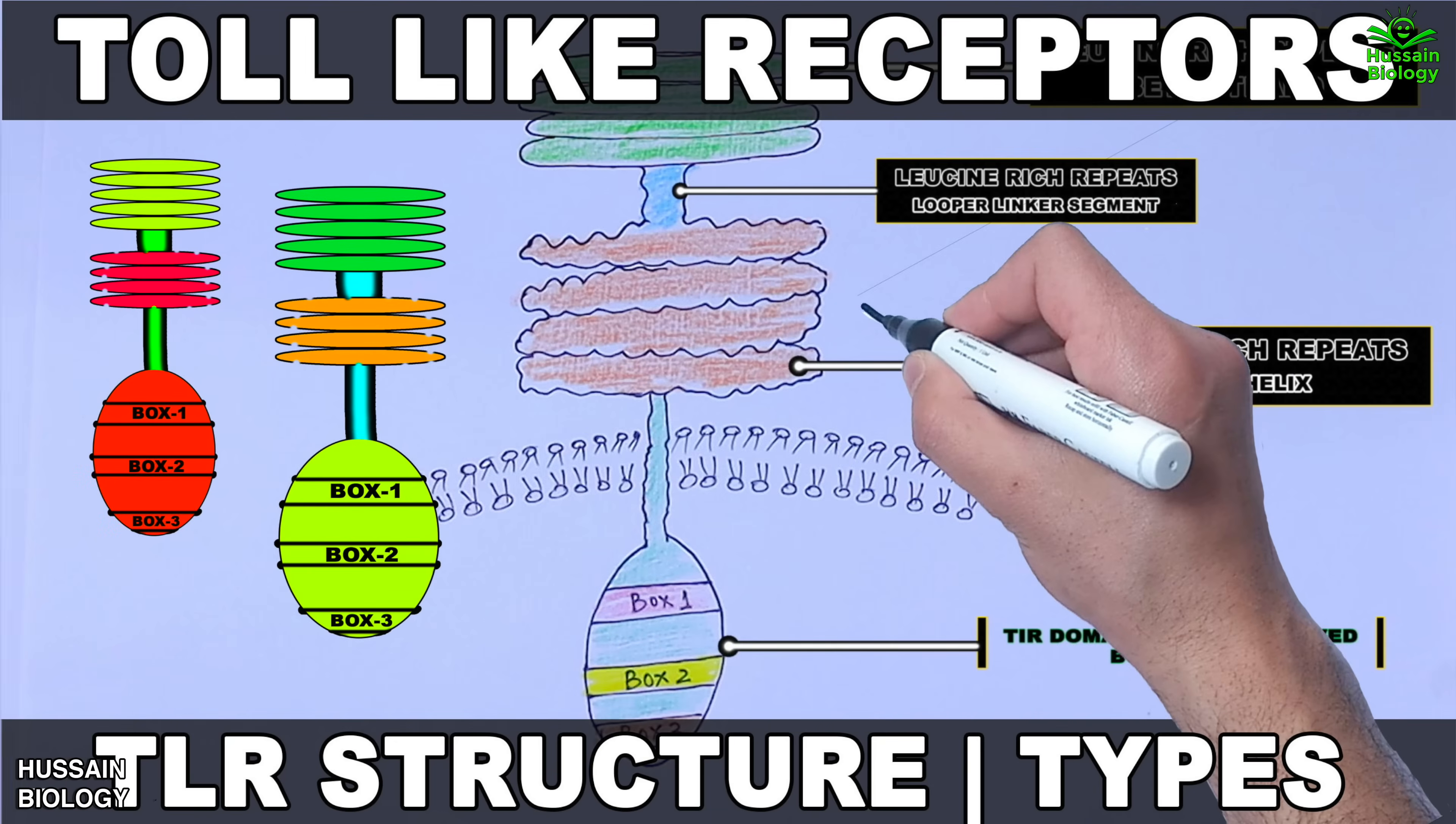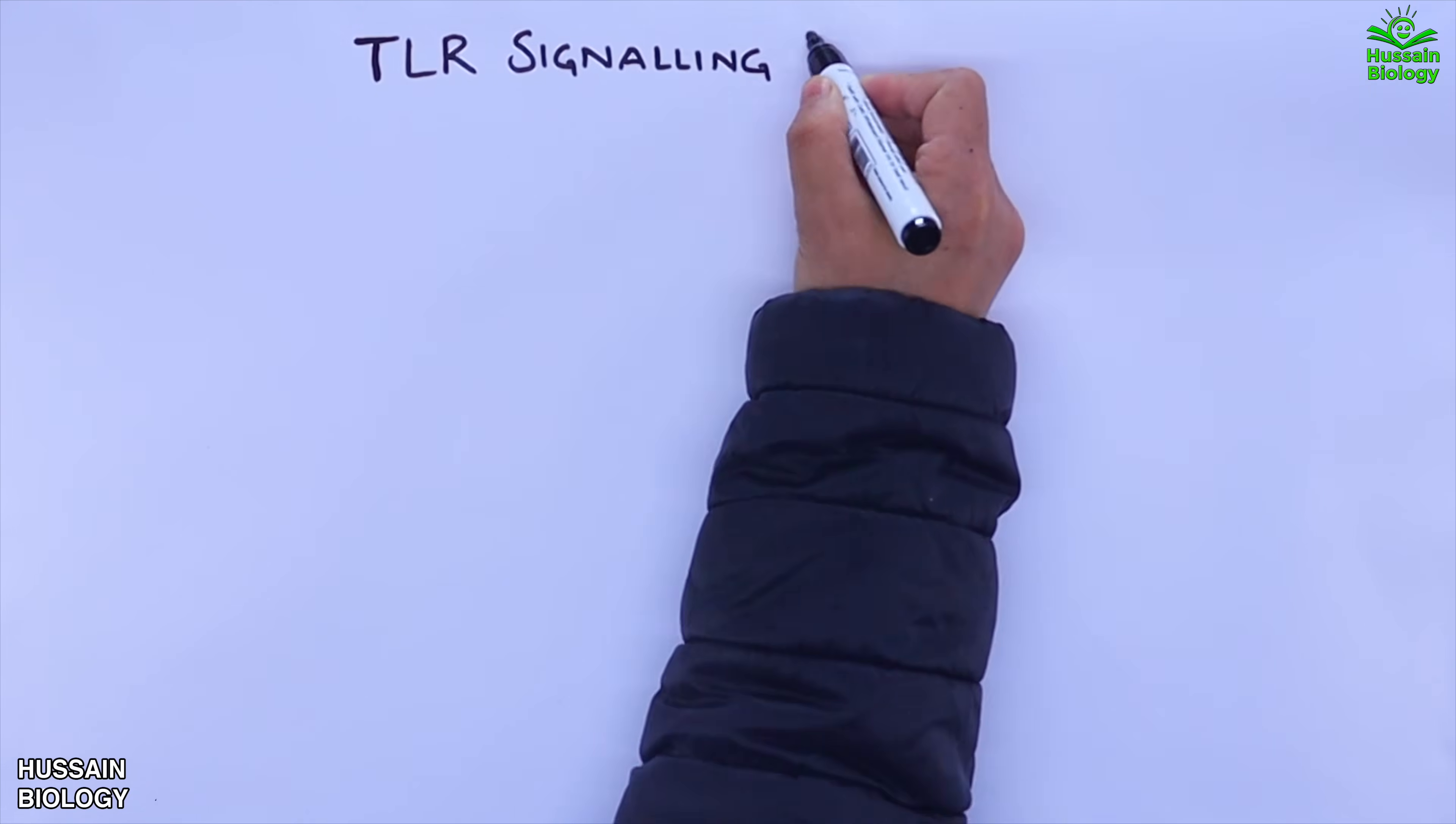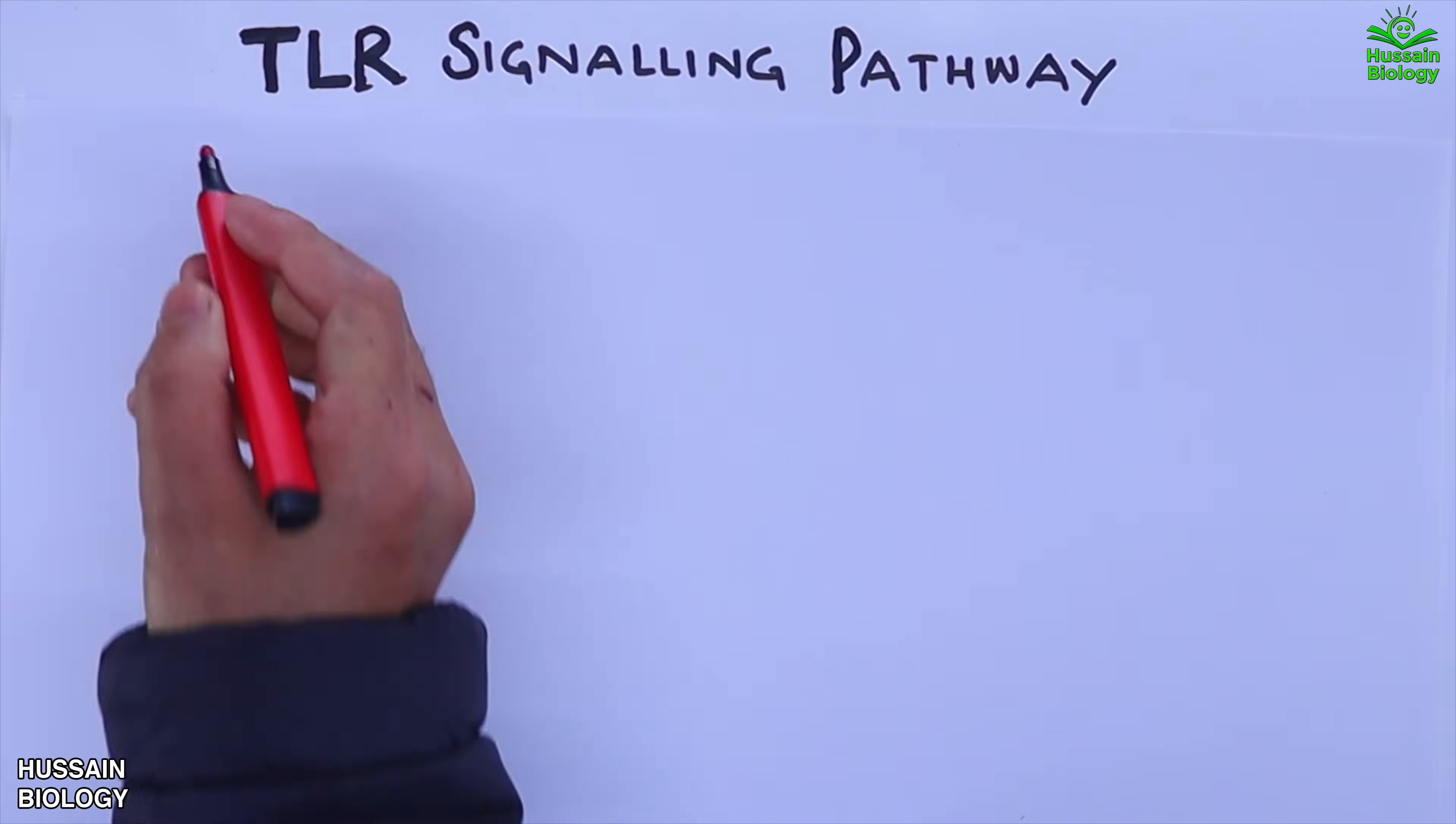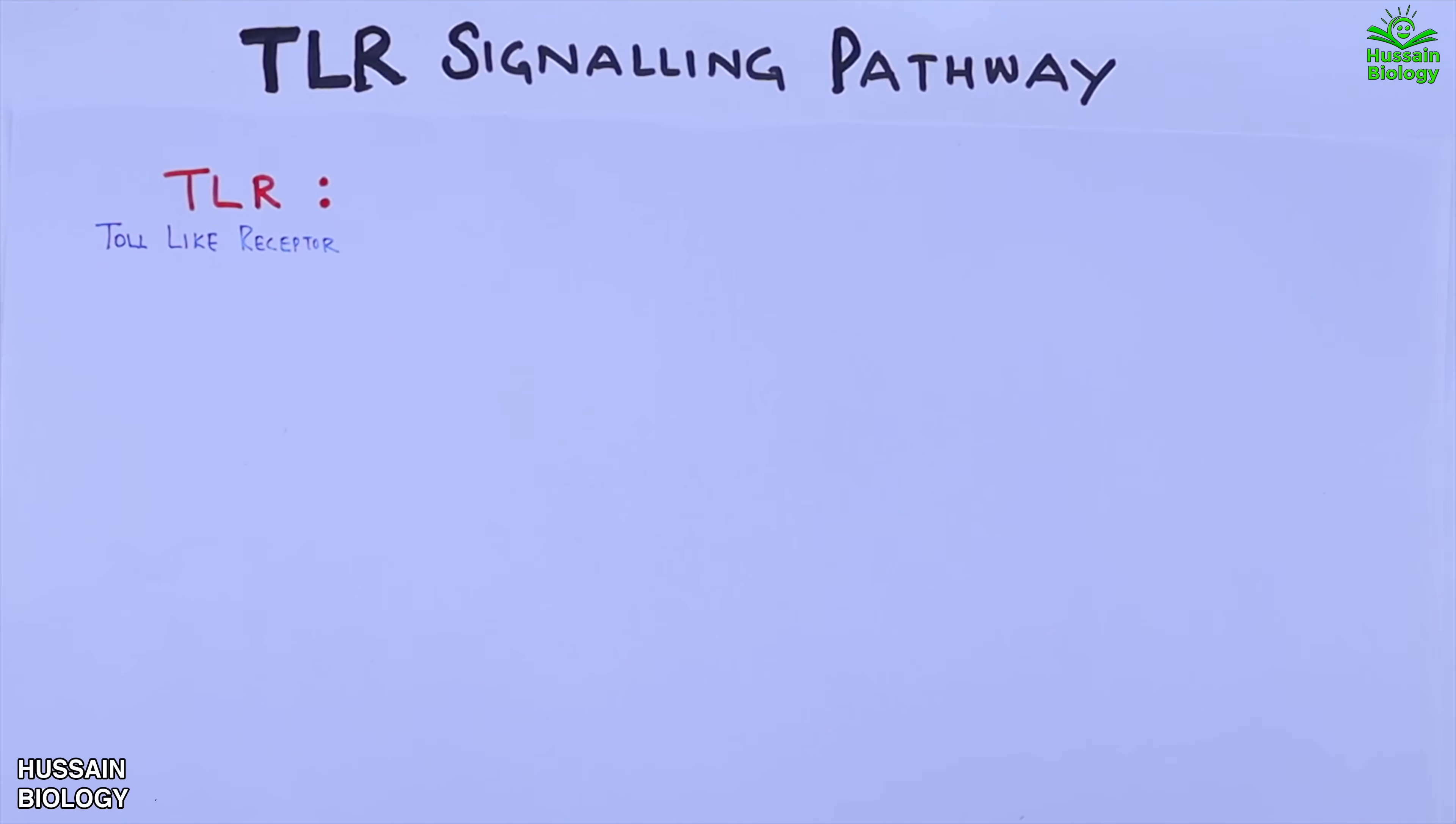Now in this video we will be discussing about the TLR signaling pathway that involves different types of toll-like receptor proteins in driving the signaling pathway upon ligand binding.